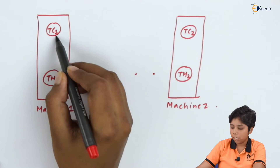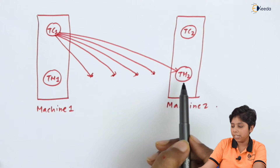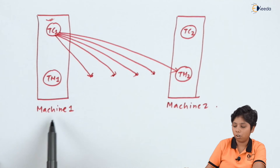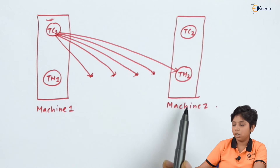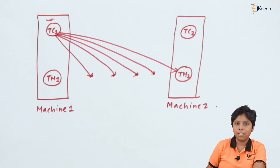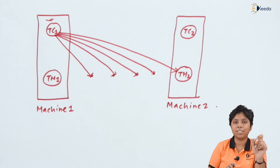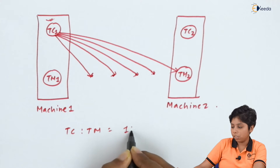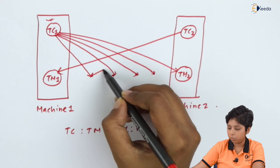The transaction coordinator of machine one connects with the transaction manager of machine two, so TM2 can get access to all transactions from the coordinator of machine one. Each transaction manager can have connections to many transaction coordinators, but one transaction coordinator can connect to many transaction managers. The relationship between a transaction coordinator and transaction managers is 1-to-N.